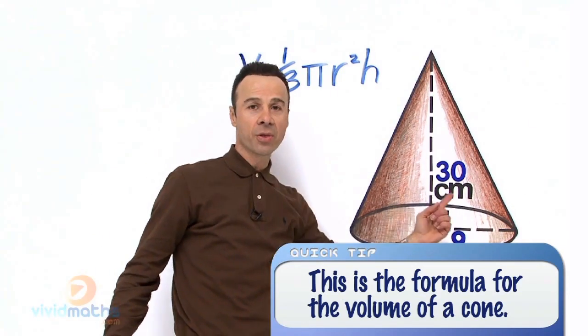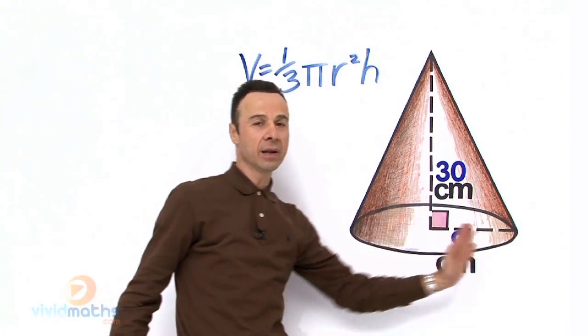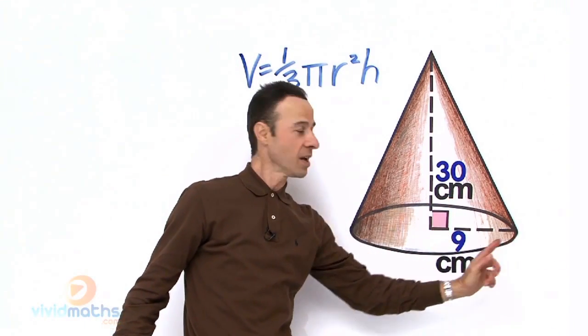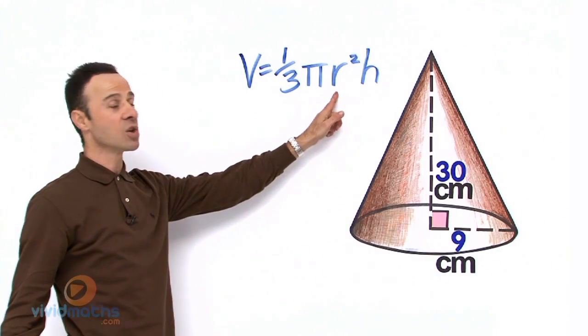Well, we got the height here, 30 centimeters, that goes right there. We have the radius right there from the center to the edge, is 9 centimeters, that goes right in there.